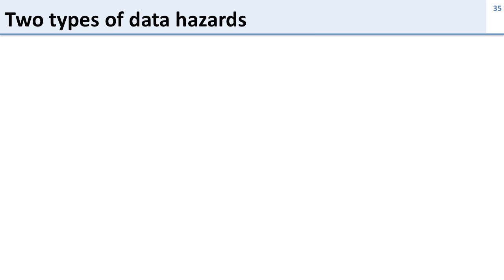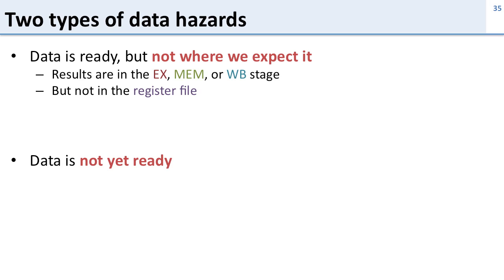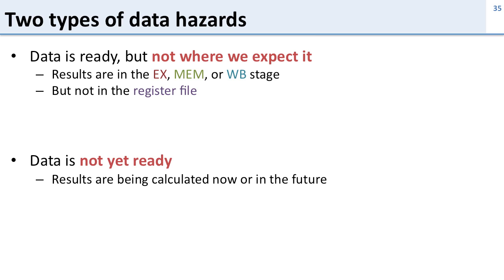There are two types of data hazards we're going to run into. The first one occurs when the data is ready but it's not where we expect it. The second one occurs when the data is not yet ready. For the first type, the results might be in the execute stage, the memory stage, or the writeback stage, but not in the register file yet. In the second case, the results are being calculated now or will be calculated in a later cycle.